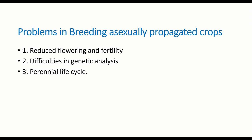Problems in breeding asexually propagated crop plants include: reduced flowering and fertility, since these crop plants are adapted to asexual reproduction they suffer from reduced flowering and eventual loss of fertility. In polyploid crop plants where vegetative reproduction is frequently used, seeds are degenerated making hybridization difficult. Generation of genetic variability is difficult in crop plants with asexual propagation.